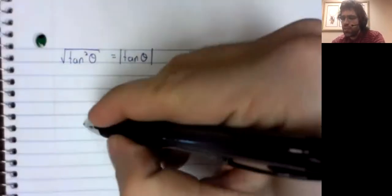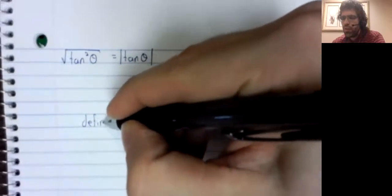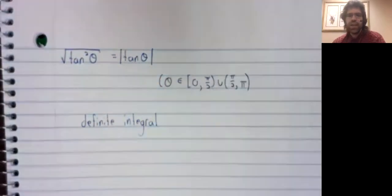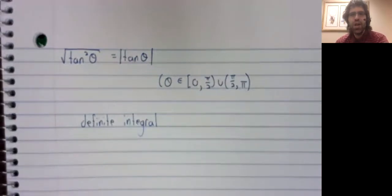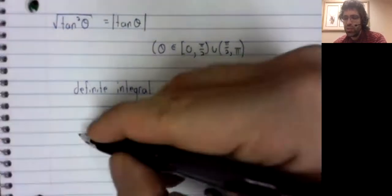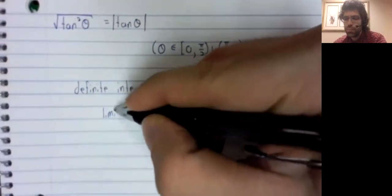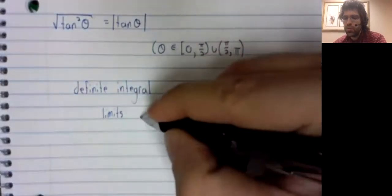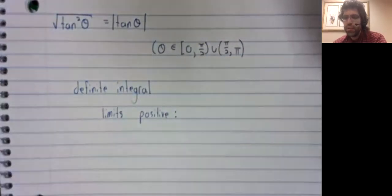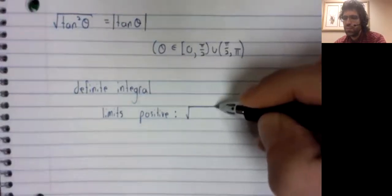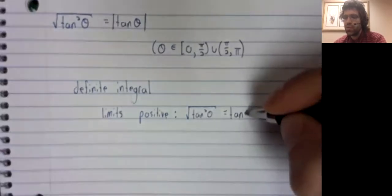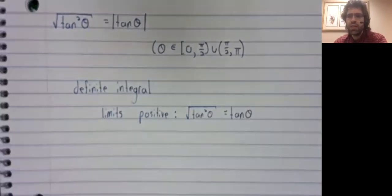I'm not too stressed about it, except that I'll make the following statements. Suppose, instead of taking a definite integral, you are taking a definite integral. And suppose your limits are positive. If your limits of integration are positive, the square root of the tangent squared is just the tangent. So exactly like we did in this video.